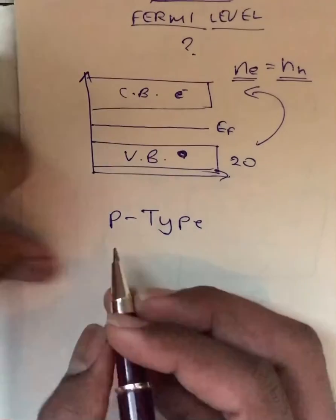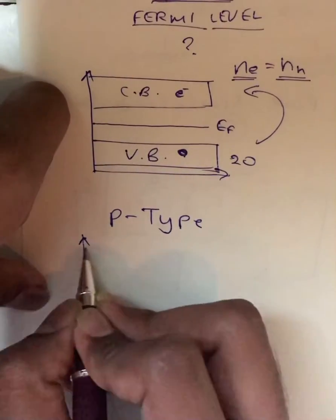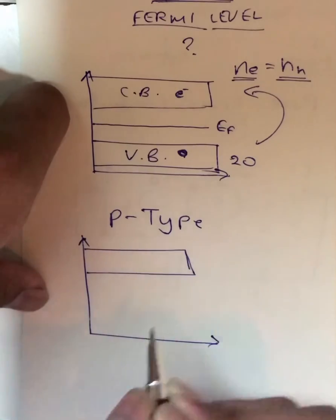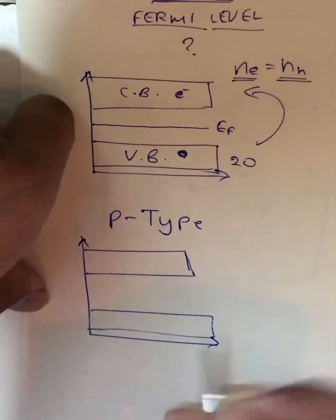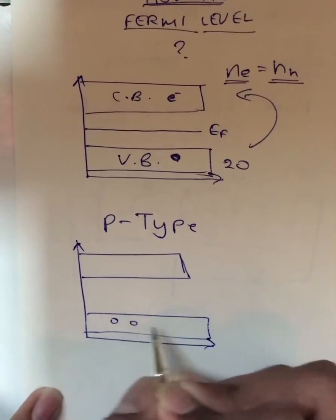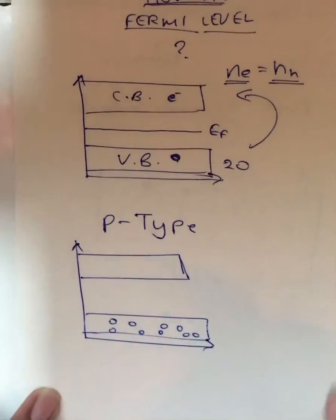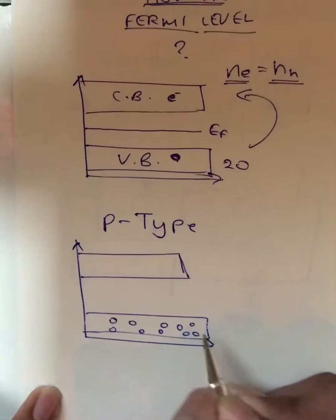Now as we all know that in a p-type semiconductor the majority charge carriers are the holes, and holes are present in this valence band. And after adding the trivalent impurity we get holes in this valence band.